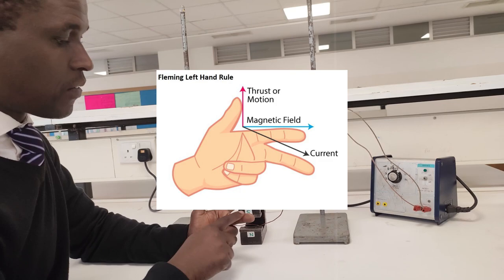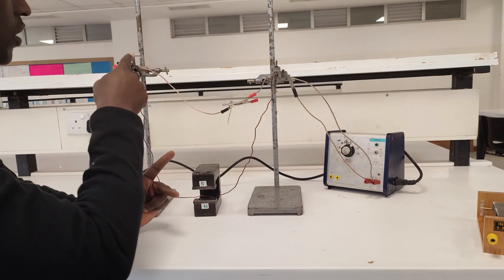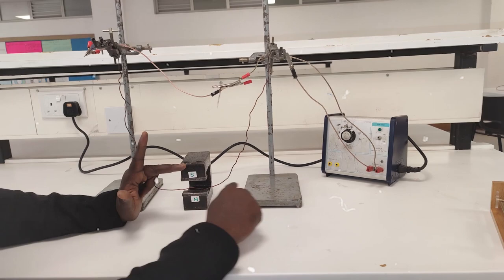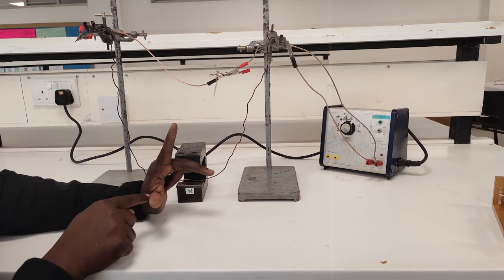So in this case, my current is flowing in this direction like that. My field is going from north to south. So I'm going to place my Fleming's left-hand rule like this. This is showing the current going like that. This is showing the magnetic field. And this is showing the direction of motion in which the wire is going to move.